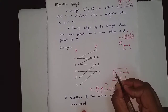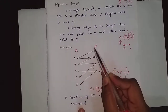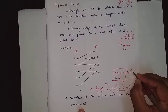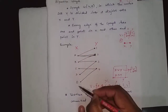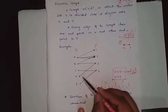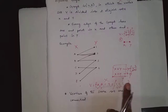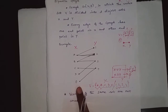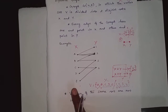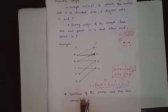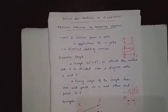X union Y gives the total vertex set V for the graph. The intersection of X and Y will be null, because no vertex appears in both sets. This property confirms that vertices in X will not be in Y and vice versa. This is called a disjoint set, and a bipartite graph contains two disjoint sets of vertices.